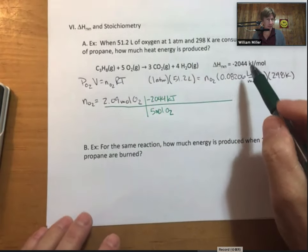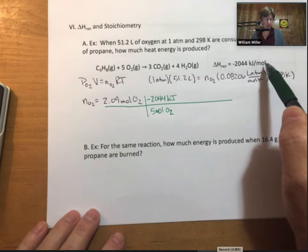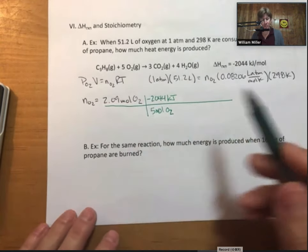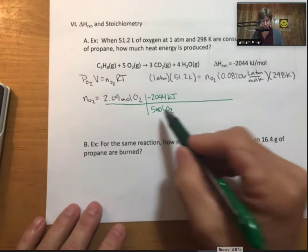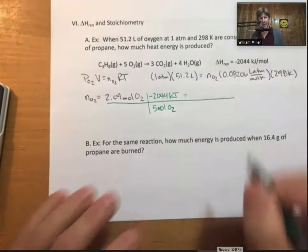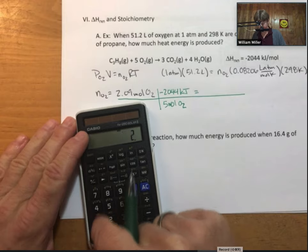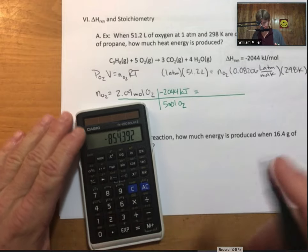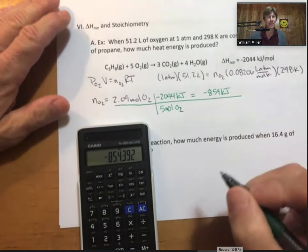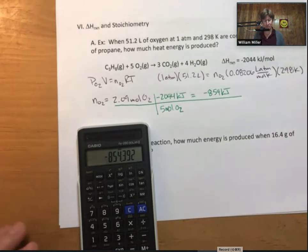Remember from a previous lecture, that's minus 2,044 kilojoules per mole of thing with a one coefficient like propane. It's 2,044 kilojoules released for 5 moles of oxygen. I think my picket fence is too long because I'm trying to find how much heat energy is produced. I get negative 854 kilojoules.